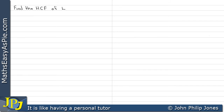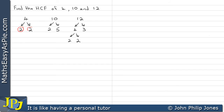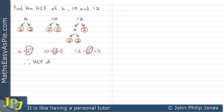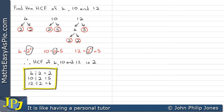Find the highest common factor of 4, 10, and 12. We express each in terms of its prime factors using the factor tree, as in previous examples. We end up seeing that 4 is 2², 10 is 2 times 5, and 12 is 2² times 3. We see what they have in common, and the thing they have in common is 2 — not 2², just the 2. So the highest common factor of 4, 10, and 12 is 2. We can see that 4, 10, and 12 can all be divided by 2.